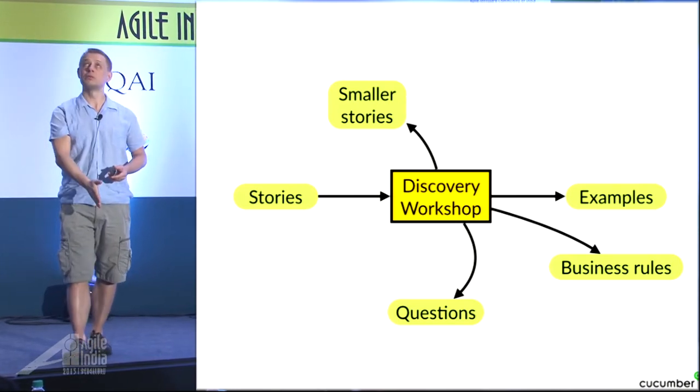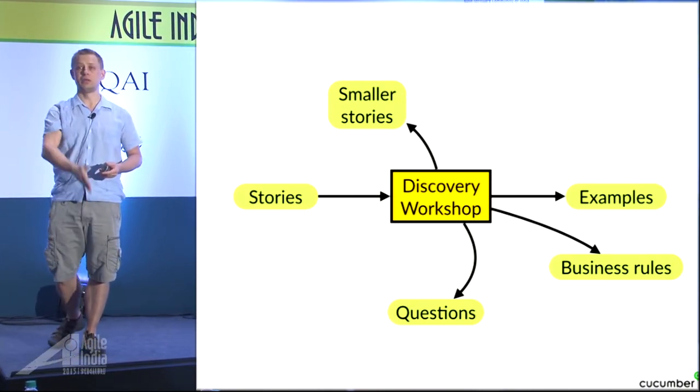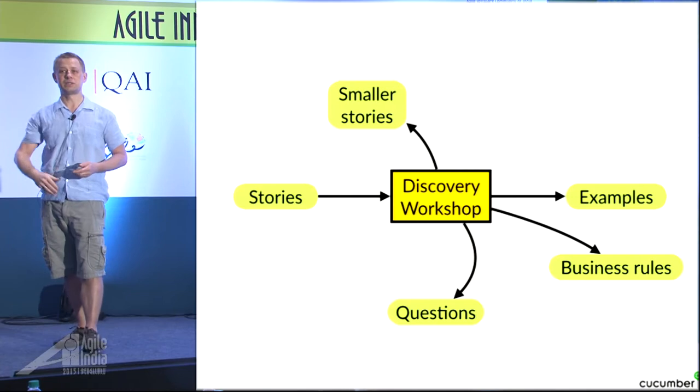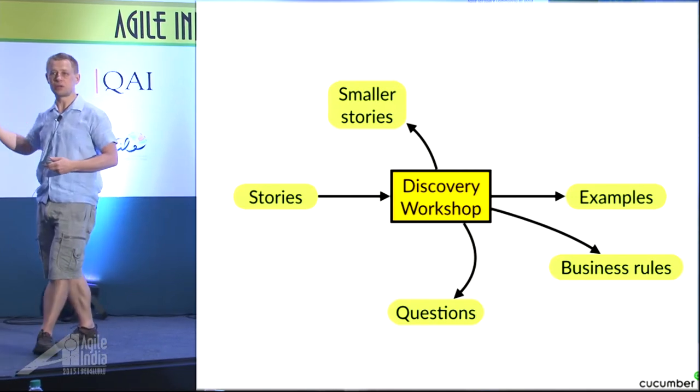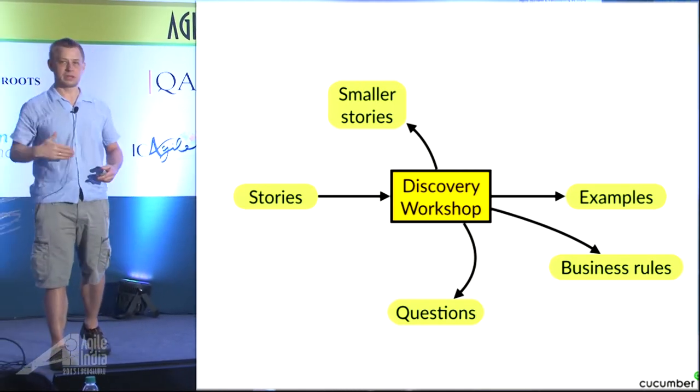Break them up by examples, which are more like vertical slices — where each one is just one path through the story, and the next one is another path.